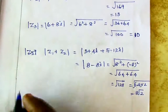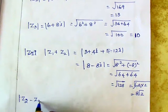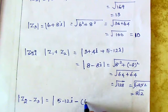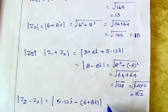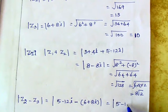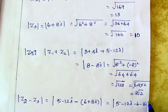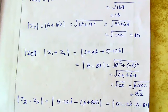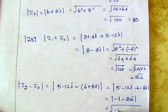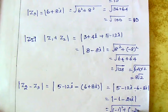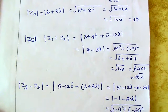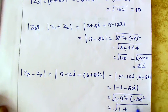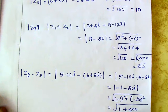Next, modulus of z2 minus z3. z2 is 5 minus 12i, minus z3 which is 6 plus 8i. Opening the bracket: 5 minus 12i minus 6 minus 8i. So 5 minus 6 gives minus 1, and minus 12i minus 8i gives minus 20i. To find the modulus: square root of minus 1 squared plus minus 20 squared. x value is minus 1, y value is minus 20. Squaring: 1 plus 400 gives square root of 401.